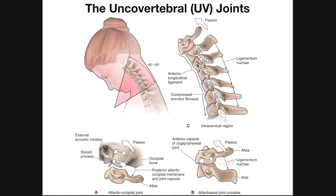This pattern continues all throughout the cervical spine. We don't see this between C7 and T1 — it's only between C6 and C7 at the bottom. This process of vertebrae moving anteriorly relative to the vertebra below is called upsloping.